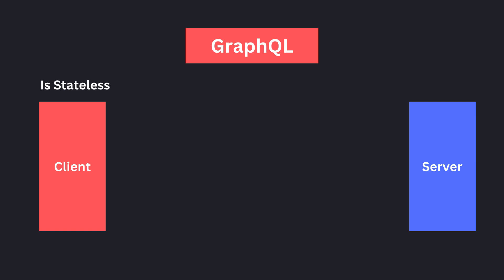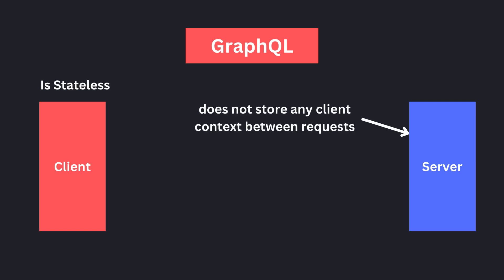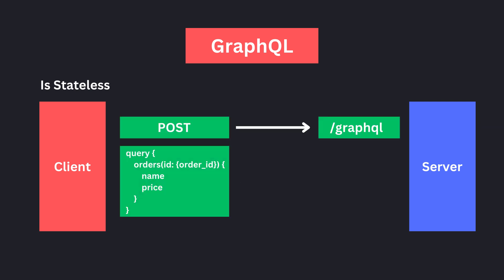GraphQL APIs are also stateless — the server does not store any client data, and each request contains all the information in the request query.